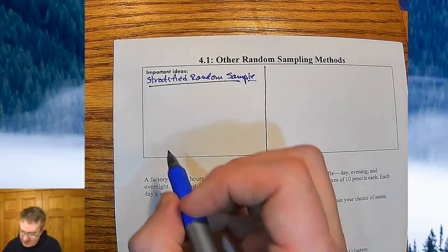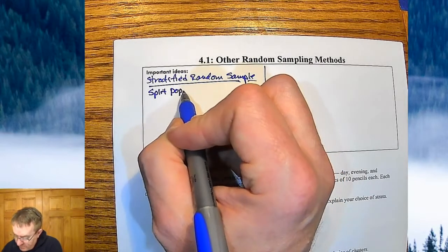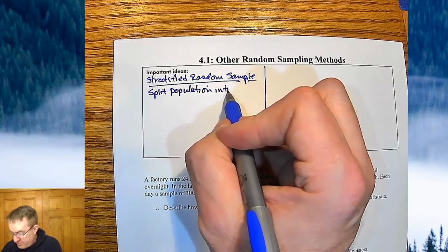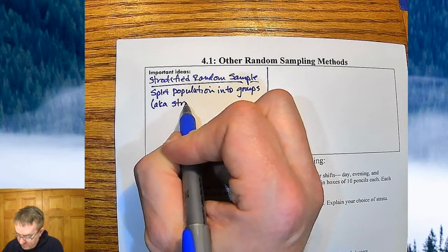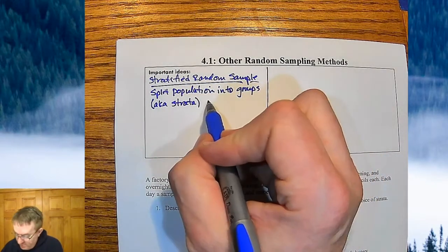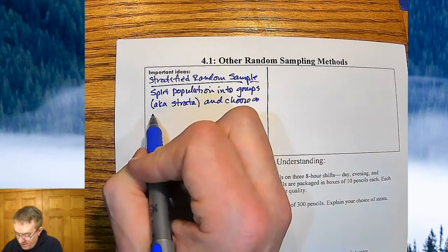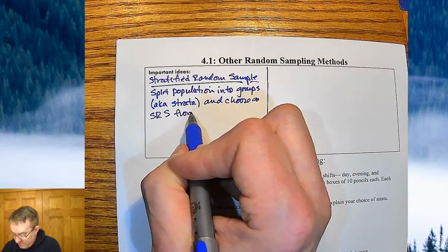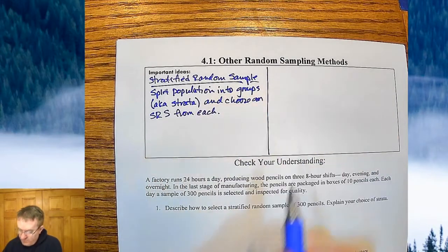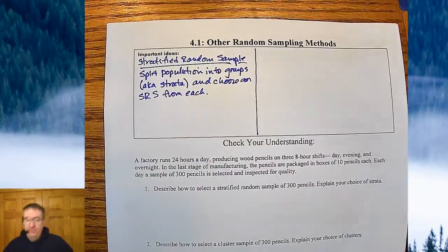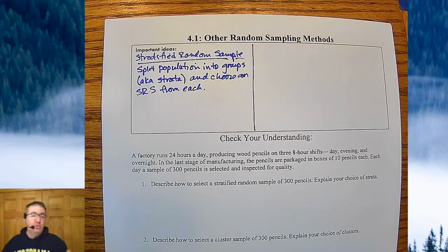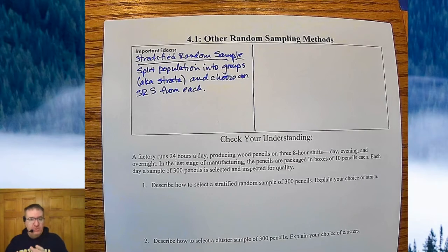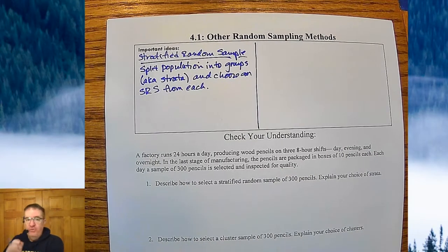So stratified random sample. What that is, is you're going to split the population into groups. Those groups are called strata, and choose an SRS from each. So you're going to split everybody into groups and then you're going to randomly pick one from each of those groups, or two or three, however many you decide to do. You still have a random component to it. You're just making sure that certain areas are for sure getting sampled. In our case, it happened to be different rows of the Justin Timberlake experience.